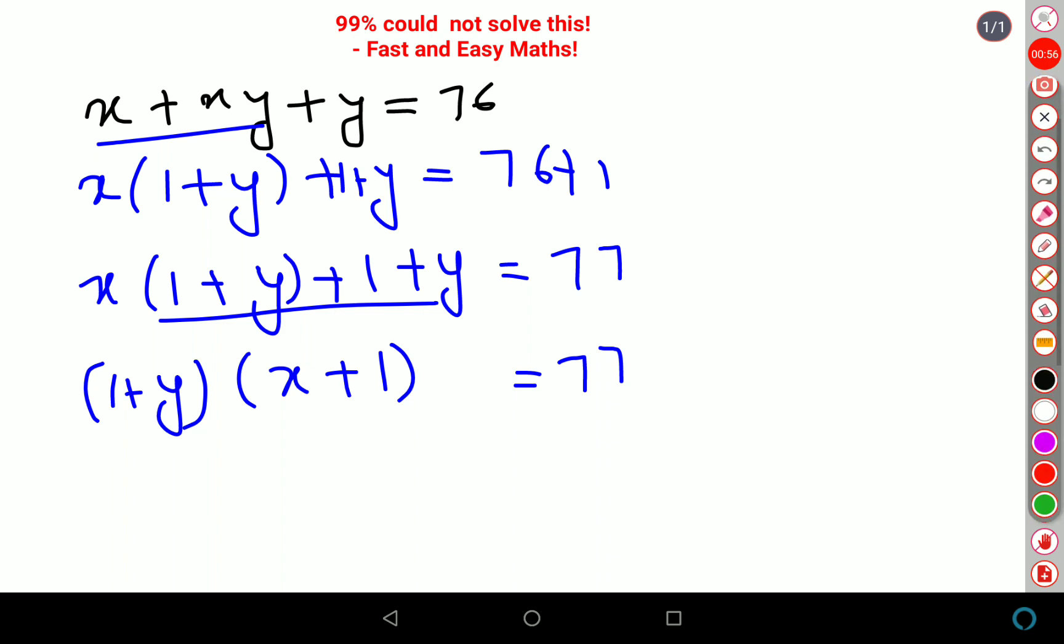Your answer is over here. Understand, 77 can be written as 7 × 11 or 11 × 7, and you can also write 77 as 77 × 1 or 1 × 77. So now let's try and put values.